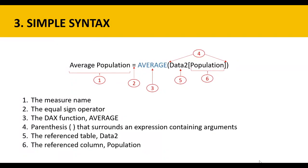Here we have a simple syntax showing the parts of a measure. Number one is the measure name. Number two is the equal sign operator. Number three is the DAX function — in this case, average. Number four is the parentheses that surround an expression containing arguments. Number five is the reference table — in this case, data two. Number six is the reference column — in this case, population. This is just a basic or simple syntax.